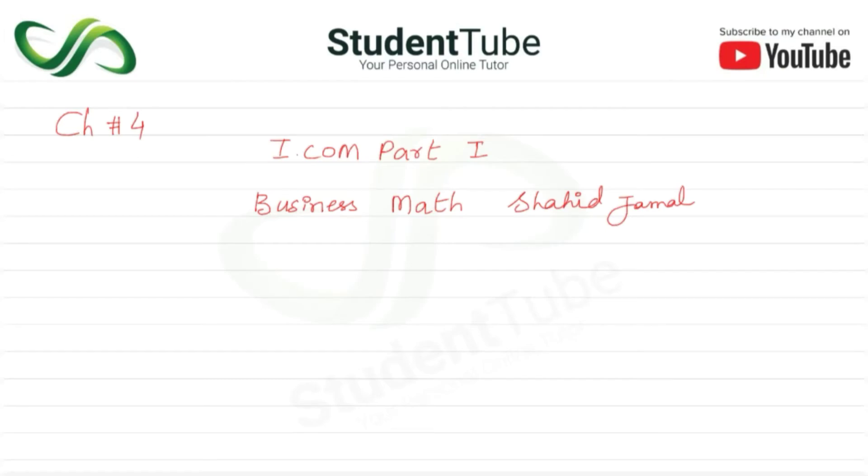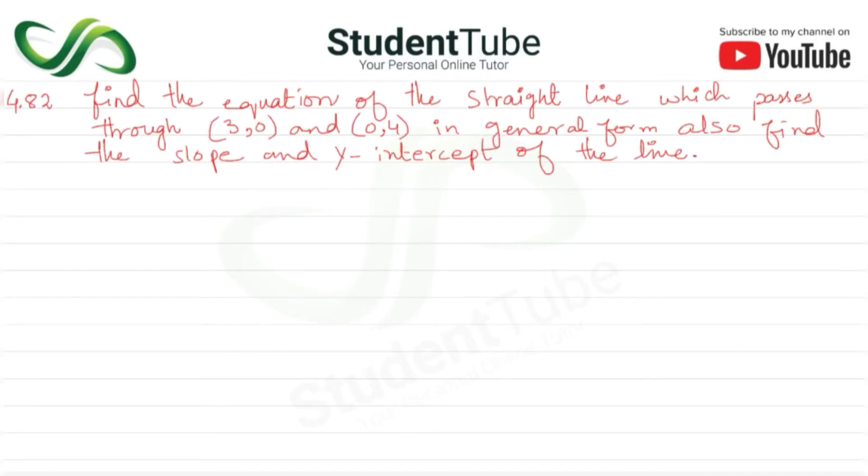Assalamu alaikum, welcome to Student Tube. In this lecture, we're covering Chapter 4, Part 1, Business Math by Bukhar Shahid Jamal. Question 4.82: Find the equation of the straight line which passes through (3,0) and (0,4) in general form. Also find the slope and y-intercept of the line.